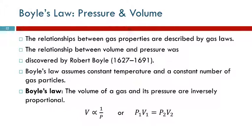The relationships between different gas properties — amount of gas, volume, temperature, and pressure — are described by what are called gas laws. Remember, a law says what happens; it doesn't explain why. Robert Boyle discovered the relationship between volume and pressure back in the 1600s. People were interested in nature and the properties of matter, so they did experiments and messed around with things.